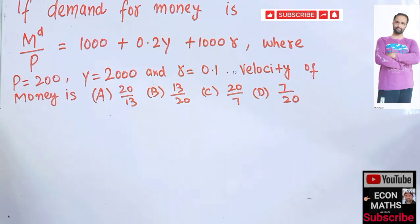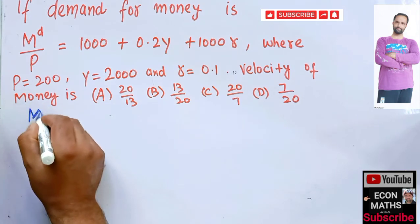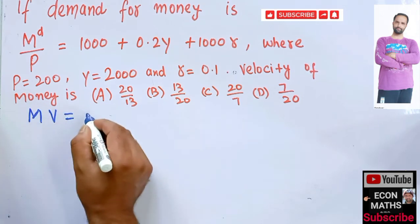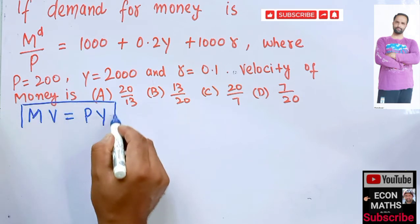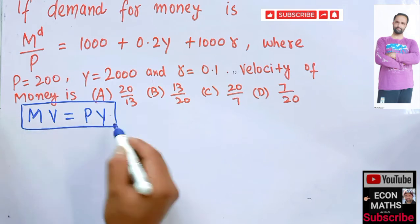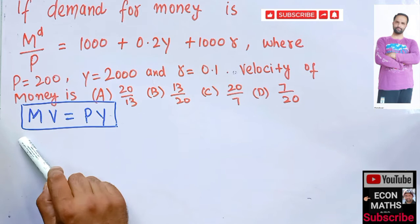We will use the equation of exchange, that is MV = PY. So using this equation or identity we can find out the velocity of money.